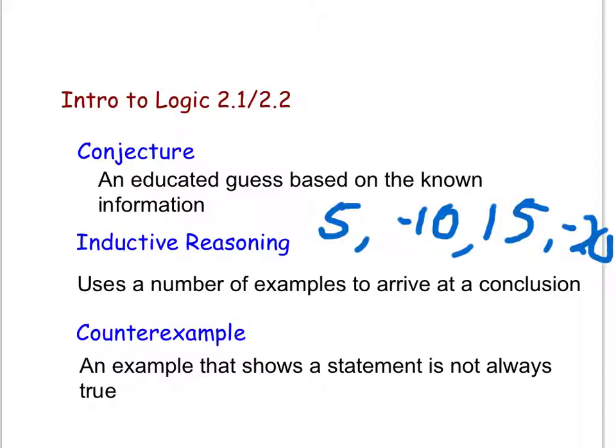A situation that is a counterexample would be, first, the statement: all freshmen are short. A counterexample of 'all freshmen are short' would be to find in your classroom a tall freshman. That person would be a counterexample to the statement, because not all freshmen are short.